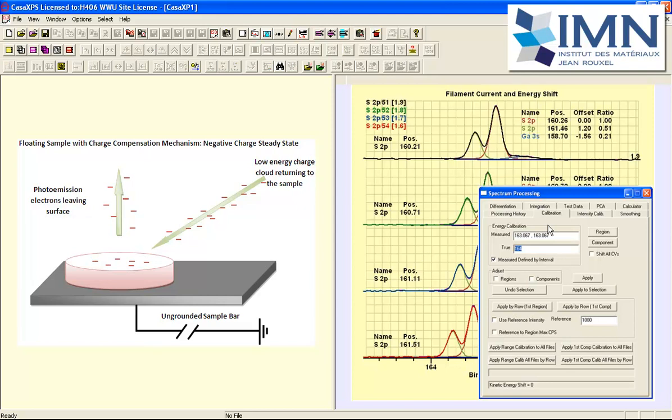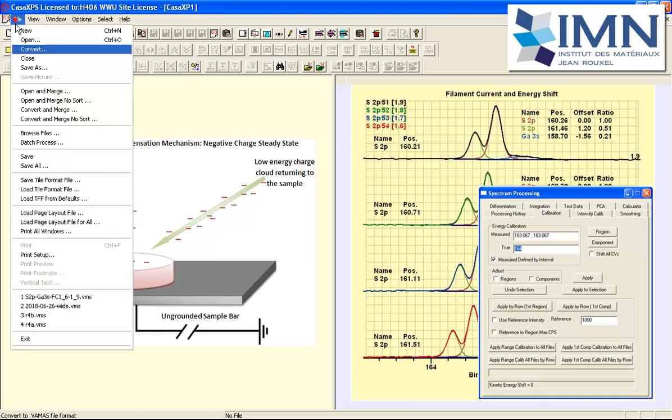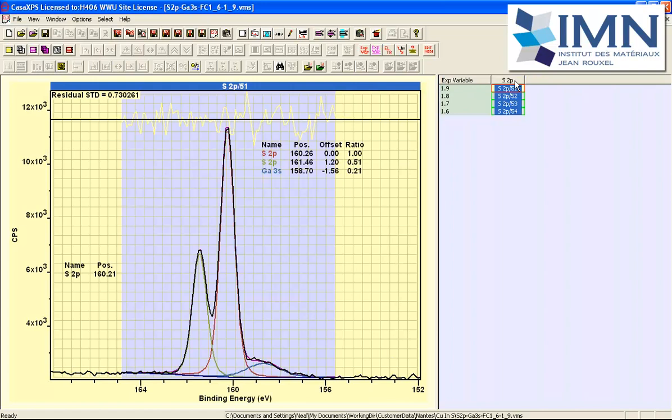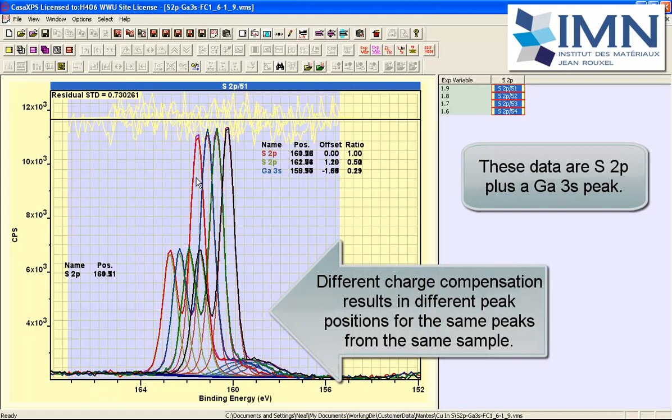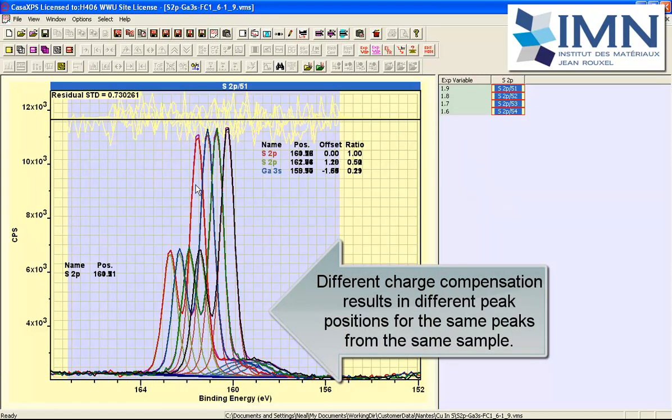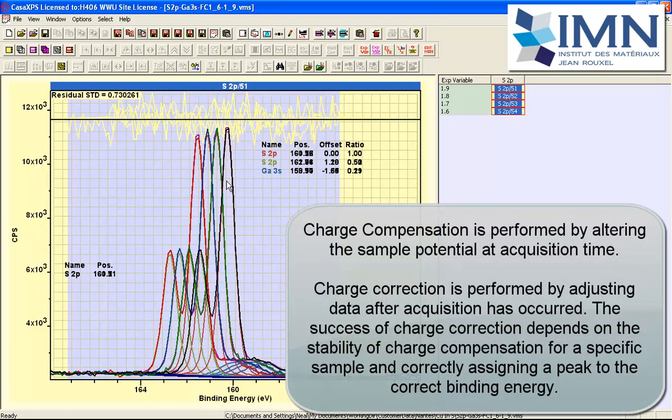We will now illustrate how this calibration property page works in the most basic form. In order to do this we will load the data file that corresponds to these spectra that you see in this image. These are a set of sulfur 2p spectra that were measured from the same sample using different charge compensation conditions and the different charge compensation has resulted in shifts in these peaks.